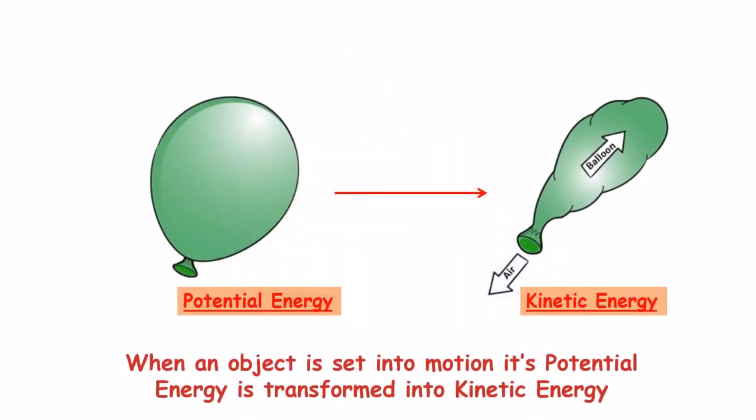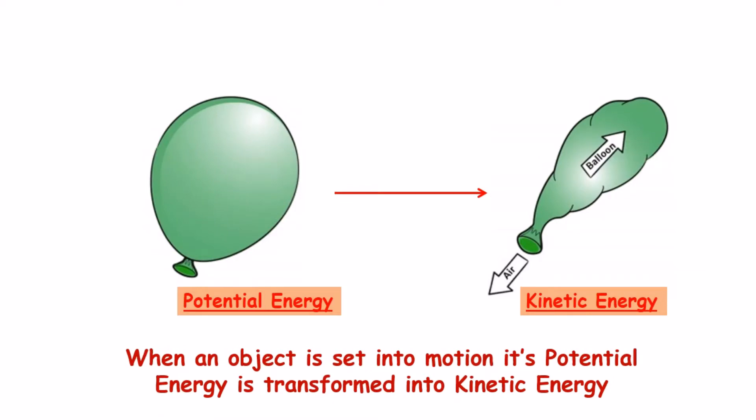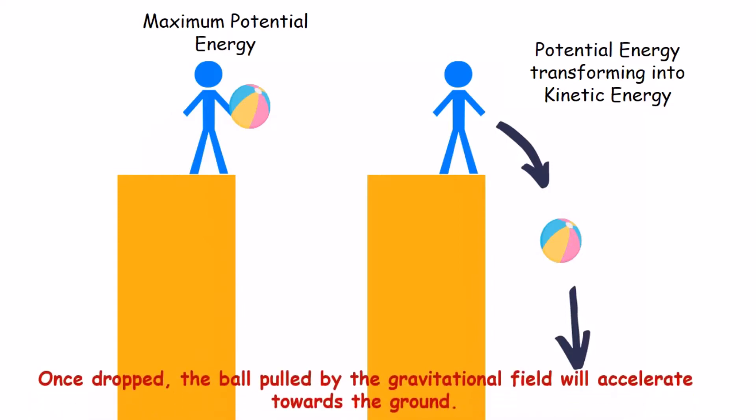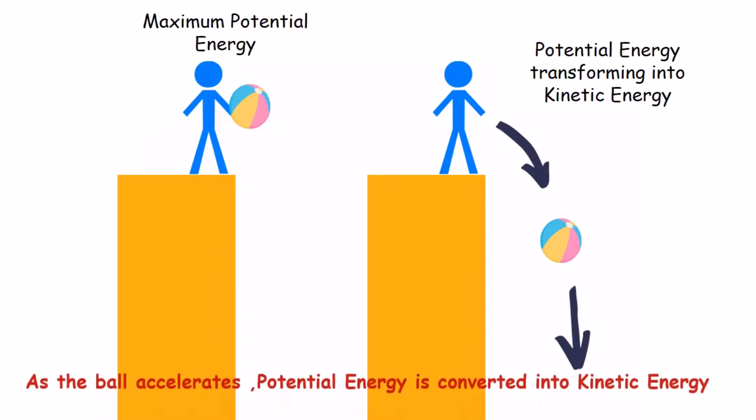When an object is set into motion, its potential energy transforms into kinetic energy. Let's take gravity as an example. A bowling ball sitting motionless at the top of a tower has a lot of potential energy. Once dropped, the ball pulled by the gravitational field accelerates towards the ground. As the ball accelerates, potential energy is converted into kinetic energy.